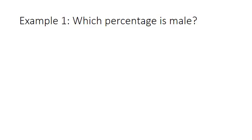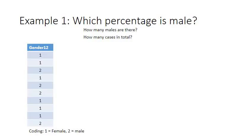In order to show why it's often preferred to code as 0, 1, I'll be using two different examples. The first one is: which percentage is male? In order to answer this, we need to know how many males there are and how many cases there are in total. If I would have coded male and female as 2 and 1, or the other way around, 1 is female and 2 is male, then to answer how many males there are, I will have to evaluate each case one by one.